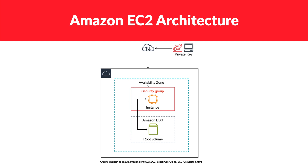The EC2 instance resides within a security group. A security group is like a firewall — think of it as very restrictive; only certain people can enter. You need to assign a security group. Also, in order to connect to an EC2 Linux instance, we'll open port 22. Ports are just like hotel room doors — door number one, door number two — so port number one, port number two. Here we'll open port 22 to connect to this EC2 instance from my personal computer.